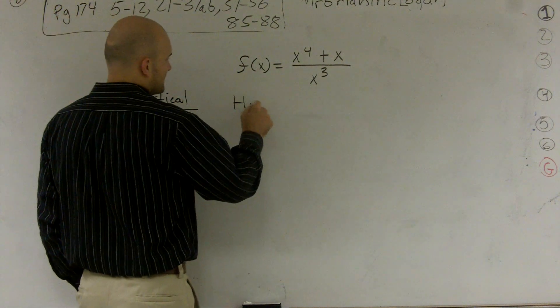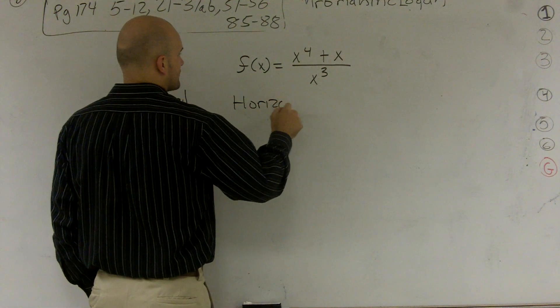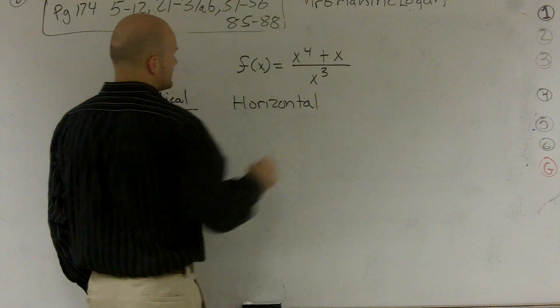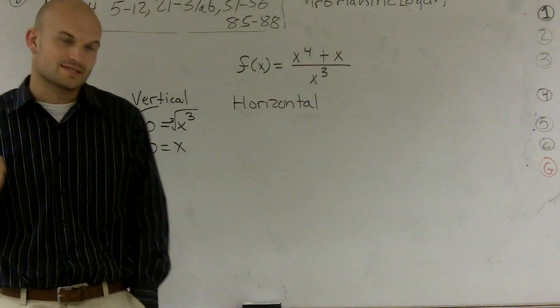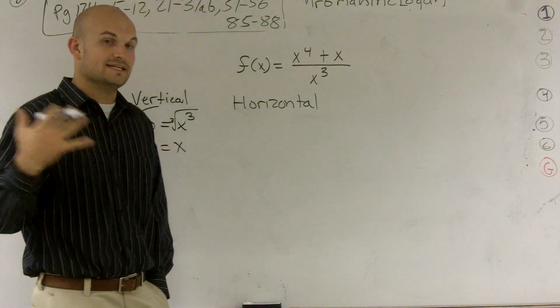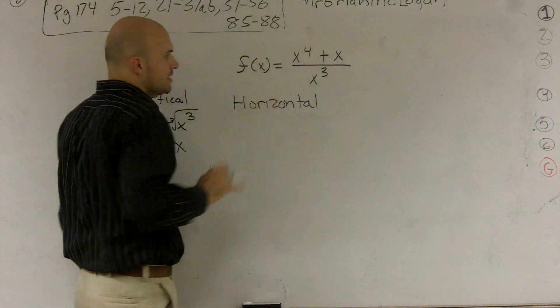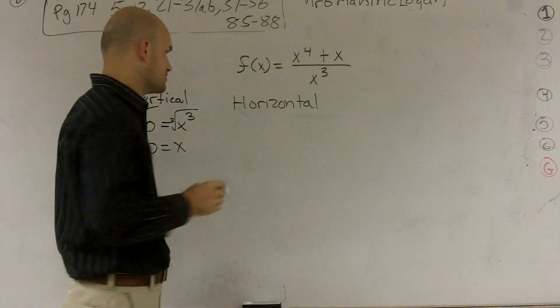The next thing is we'll go ahead and test to see if there's a horizontal asymptote. Now, remember, horizontal, there's a couple things we need to look at. Your degrees. You need to look at your leading term. Make sure it's in descending order. But the first thing you need to look at your degrees.